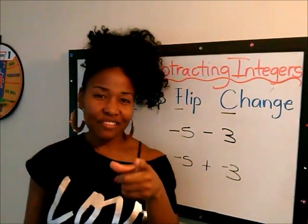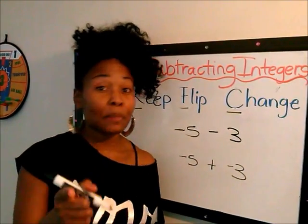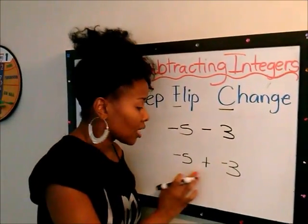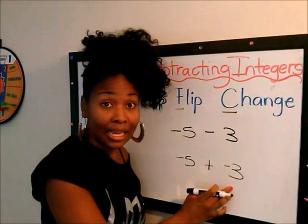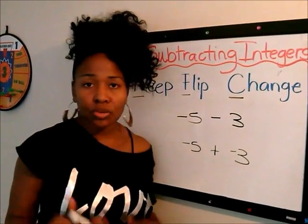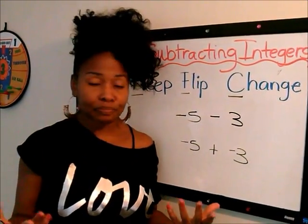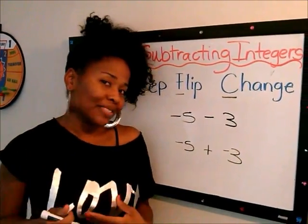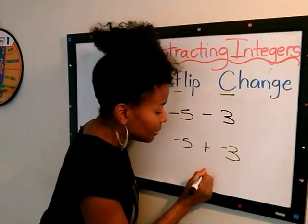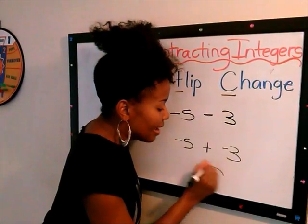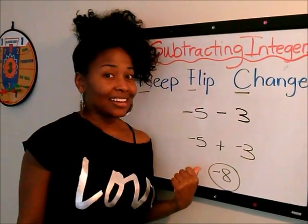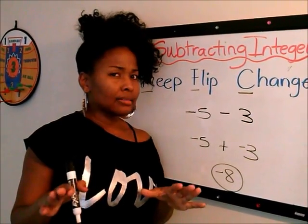That's a love situation. Remember from the last video, if we have two integers that are the same sign — which these are both negative — all we do is we add them and we keep the sign. So negative five plus negative three gives me a negative eight. All right, we got it?